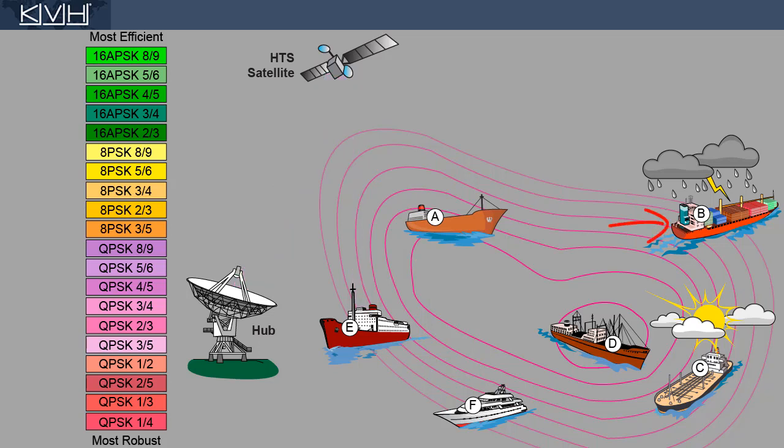Vessel B is also approaching the edge of the beam, and the storm has increased in severity. In this worst-case scenario, a very robust MODCOD is needed to maintain the link.